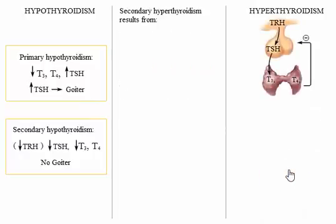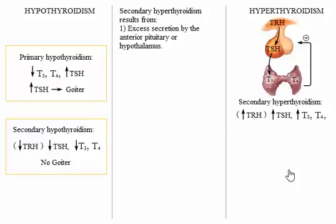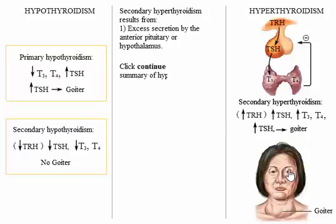Secondary hyperthyroidism results from excess secretion by the anterior pituitary or hypothalamus. In this condition, when thyroid-stimulating hormone and possibly also thyroid-releasing hormone levels are high, T3 and T4 levels increase. Because TSH levels are high, secondary hyperthyroidism will be associated with enlargement of the thyroid gland. Click Continue to see a summary of hyperthyroidism.